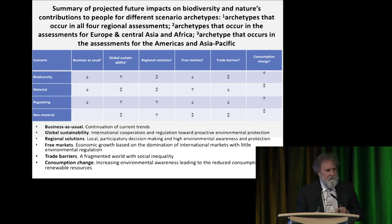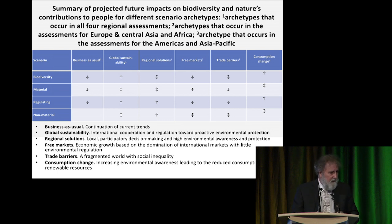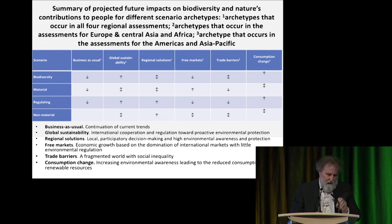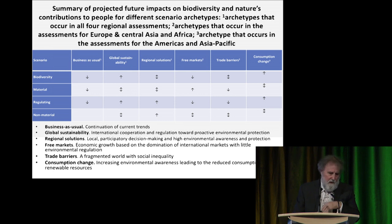If you look at the results: business as usual — everything gets worse. Global sustainability — things can get better. Regional solutions — also much better than business as usual. Free markets — we lose biodiversity and regulating services. Trade barriers — equally bad. But consumption change — thinking about consumption at the individual and community level — can also make a positive difference. Around 2020, if we start to think about how to use technology and sustainability, we can bend the curve.